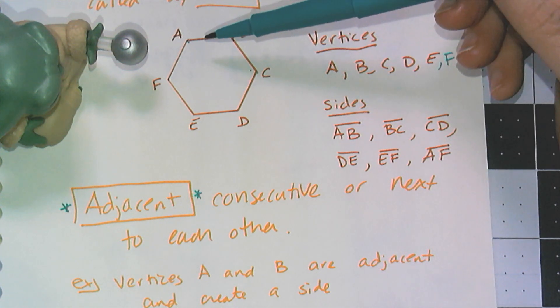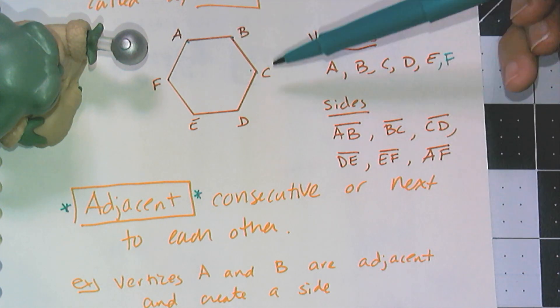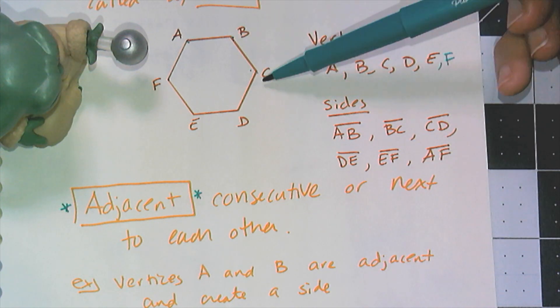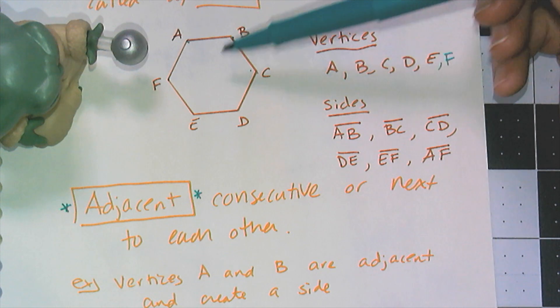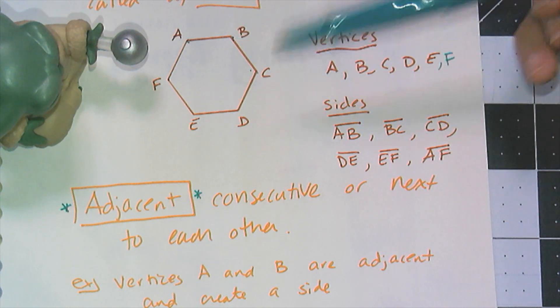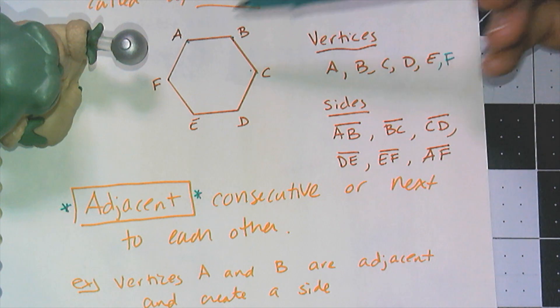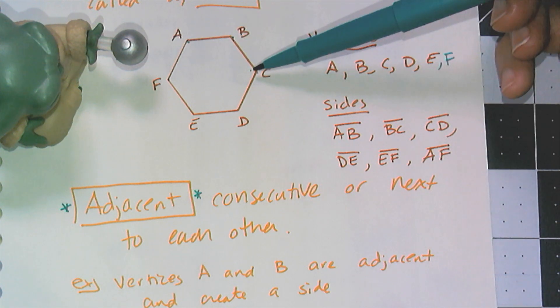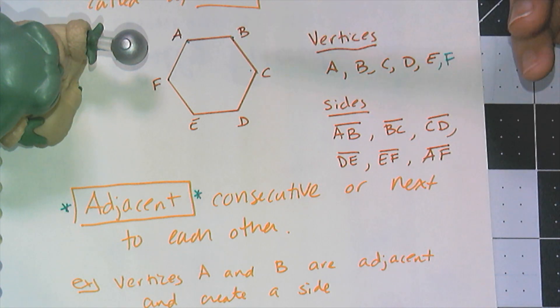It's not just vertices that can be adjacent. Sides can be adjacent, meaning consecutive or right next to each other. So side AB is adjacent to side BC, but AB is not adjacent to side ED. Angles can also be adjacent, so angle A and angle B are adjacent, but A and C angles are not adjacent.